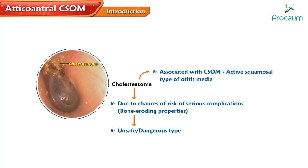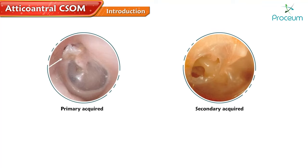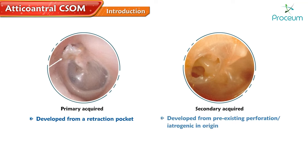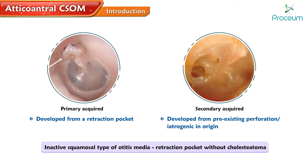When chronic suppurative otitis media is associated with cholesteatoma, the disease is called an active squamous cell type of otitis media. It can be primary acquired and secondary acquired. If it has developed from a retraction pocket, it is considered primarily acquired. Secondary cholesteatoma develops from pre-existing perforation or is iatrogenic in origin. The term 'active squamous cell type of otitis media' is used when there is a retraction pocket without cholesteatoma.